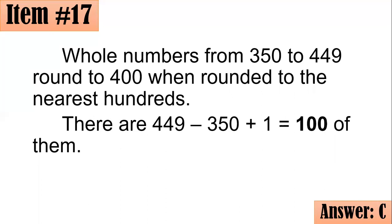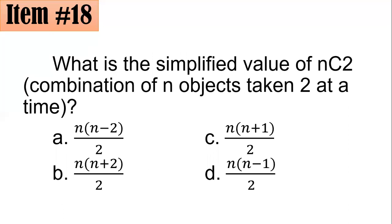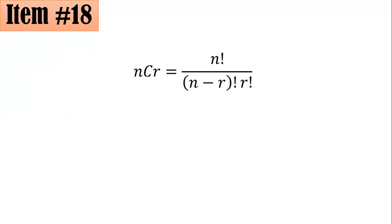Item number 18. What is the simplified value of nC2 or the combination of n objects taken 2 at a time? Is it A, B, C, or D? Take a close look at these values. But first, we have to remember the definition or the formula for combination. And that is, nCr = n! / [(n-r)! × r!]. So since our r is 2, so we will replace all r's with 2. So we have nC2 = n! / [(n-2)! × 2!].